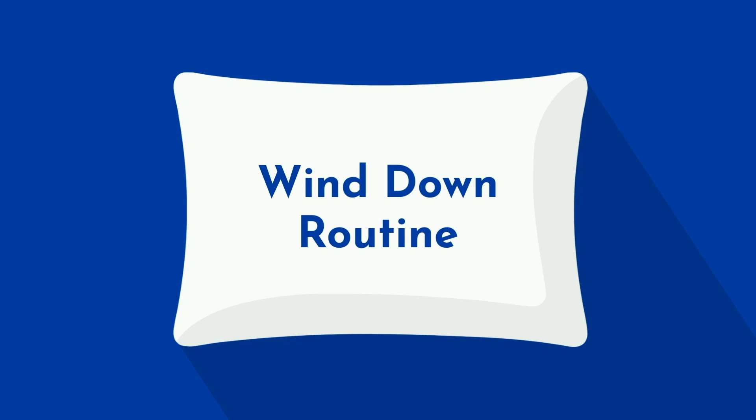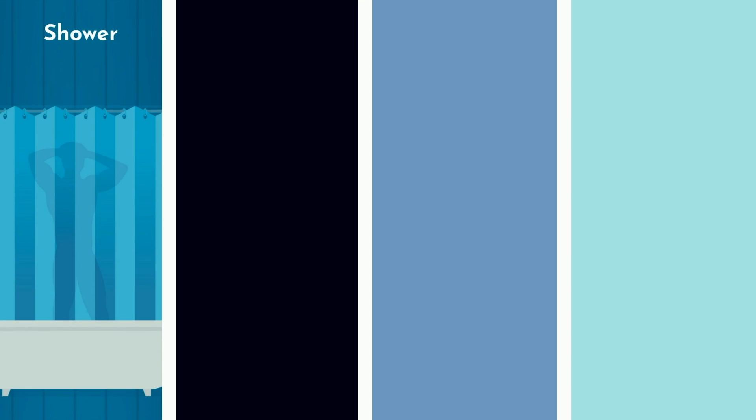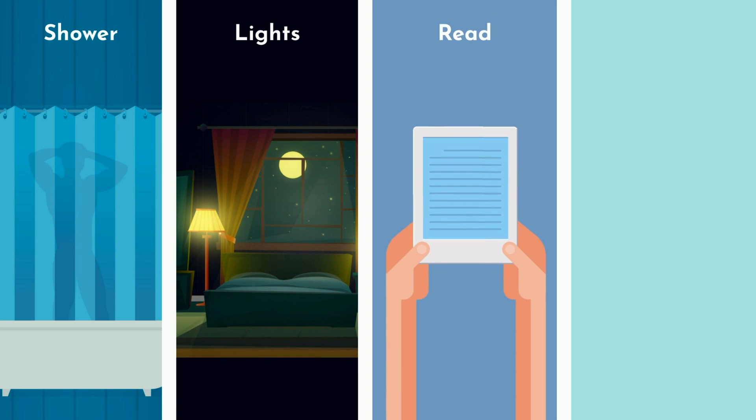Lastly, it's incredibly important for me to stick to a wind down routine before bed. If I don't, I find myself tossing and turning with too much energy. In short, I shower, set my bedroom lights to a dim red, read my Kindle, and set my bedroom thermostat to a cooler temperature.